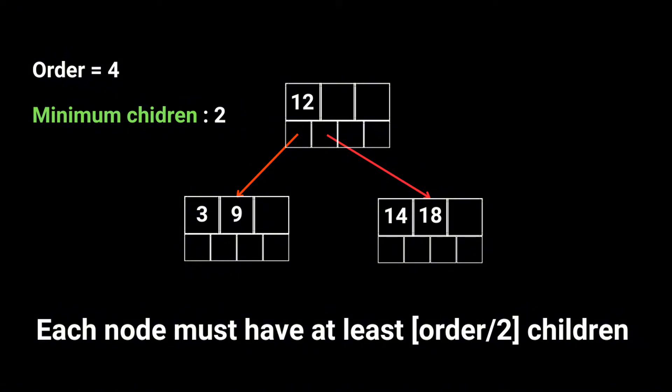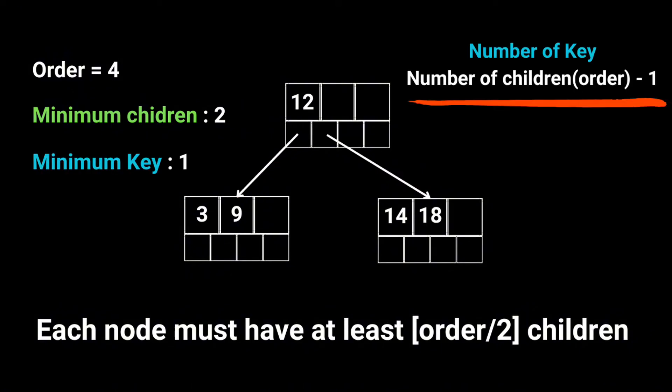And remember, the minimum number of keys is always one less than the number of children, so for this tree, it's one. I hope this clears up the basics and helps you understand the key points of a B plus tree.